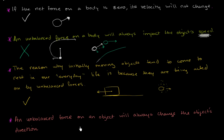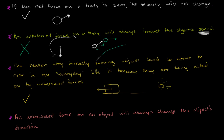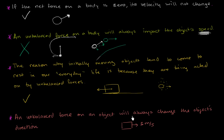The last statement: an unbalanced force on an object will always change the object's direction. This one is perhaps the most intuitive to disprove. If I have a block traveling at 5 meters per second in some direction and I apply an unbalanced force in that same direction, I'll just accelerate it in that same direction — no change in direction. Even if I act against it, I might decelerate it but won't necessarily change its direction. An unbalanced force can change direction, but not always. The word 'always' is what makes this statement very wrong.